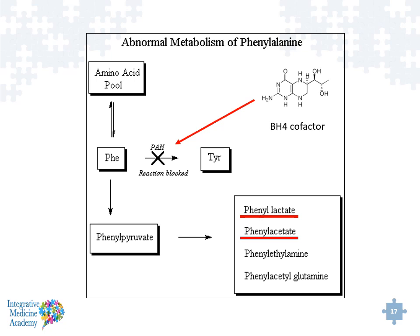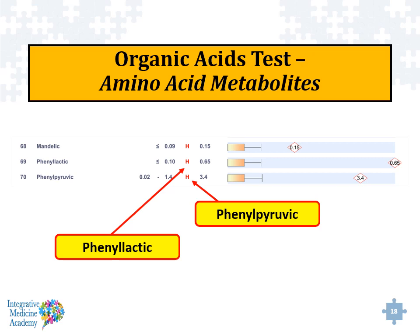BH4 is something that you can either get as a medication or a supplement. Abnormal metabolism of phenylalanine occurs when phenylalanine hydroxylase becomes inhibited or blocked — which could be genetic — and BH4 acts as a cofactor. On the organic acids test from Great Plains, we can see an increase in phenyllactic acid or phenylacetic acid. It's typically found in the amino acid metabolite section on the last page of the OAT. So if you see increased phenyllactic and phenylpyruvic, that is a suspicion that there is a BH4 deficiency or something blocking the phenylalanine hydroxylase enzyme.